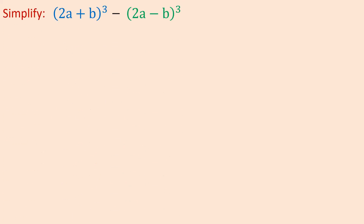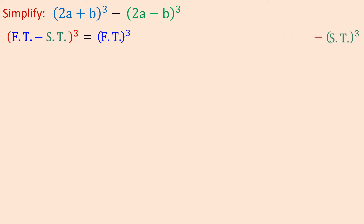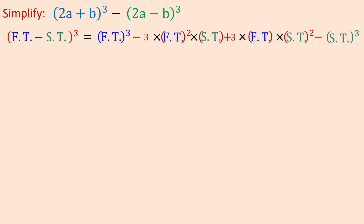So we have (2a + b)³ minus (2a - b)³. We will first simplify each individual binomial. Our formula for (first term + second term)³ equals first term cubed, plus 3 times first term squared times second term, plus 3 times first term times second term squared, plus second term cubed. This gives us 4 terms. The first and fourth terms come from cubing each term, and the two middle terms follow the same method.